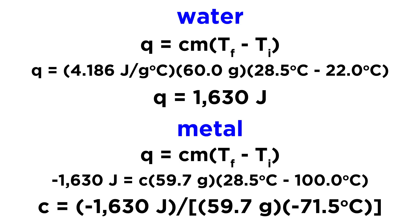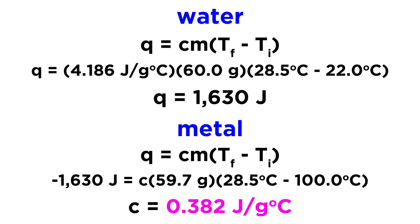So if we go ahead and do the arithmetic, we can solve for C. That's going to be negative 1,630 joules over the quantity 59.7 grams times negative 71.5 degrees Celsius. That's why it's important to do T final minus T initial because we need a negative delta T in order to cancel out the negative Q value to give us a positive specific heat. Remember, we're going to need a positive number for specific heat. A negative number wouldn't make any sense. So we need a negative delta T there. So we plug all that into the calculator and we get 0.382 joules per gram degree Celsius as the specific heat of this metal.